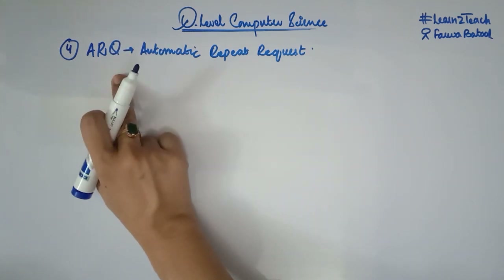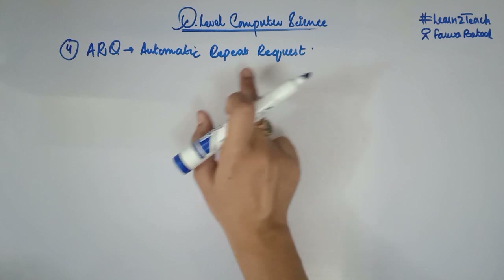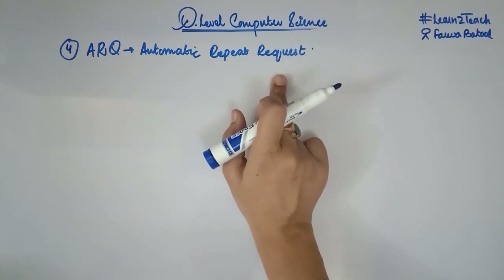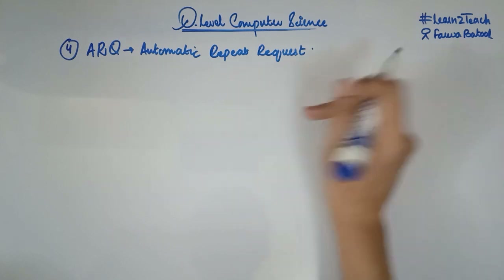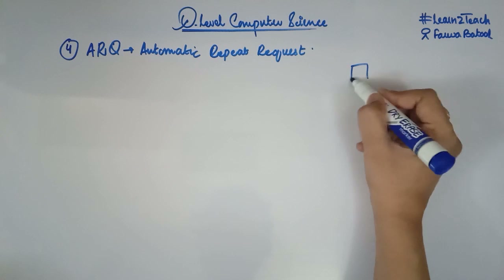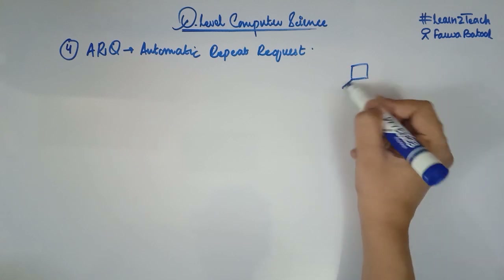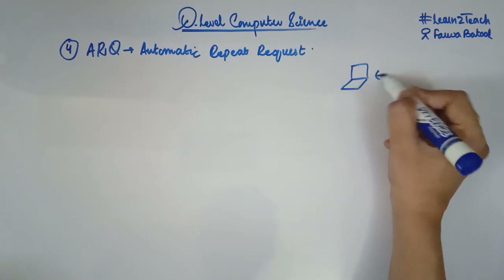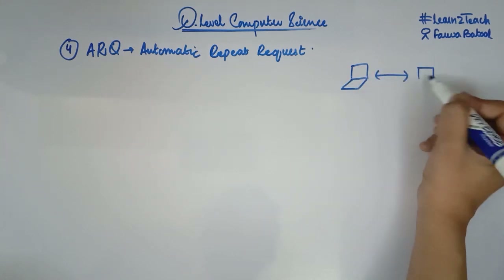What is ARQ? ARQ stands for Automatic Repeat Request. It is an error detection and correction method — we can also call it an error control method — that is used in data transmission in order to detect errors in the data that has been transmitted.